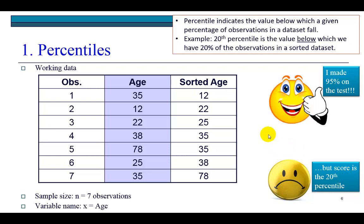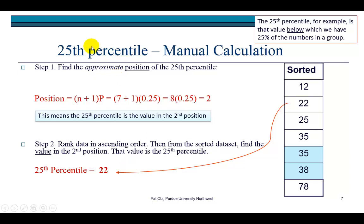Let's do a quick example using these data sets. We took a random sample of seven individuals and here are their ages. Person number one is 35 years of age, person number four 38 years of age, person number seven 35 years of age. So the variable here is age, and we wish to calculate the 25th percentile. That value below which we have 25% of the ages.